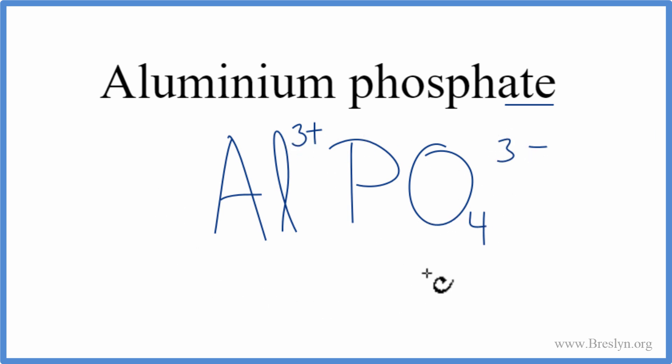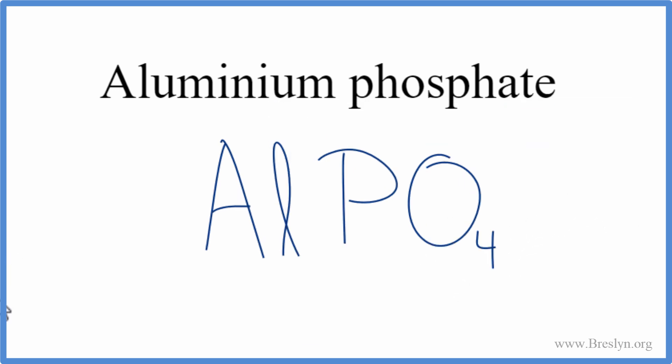So this is the formula for aluminum phosphate. Let's clean this up — aluminum phosphate: AlPO4.